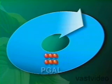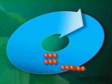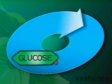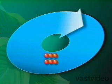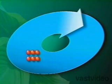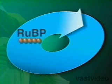Some of the PGAL leaves the Calvin cycle and forms glucose. The rest continue on through the Calvin cycle and through a series of chemical reactions change into RUBP, enabling the cycle to begin once again.